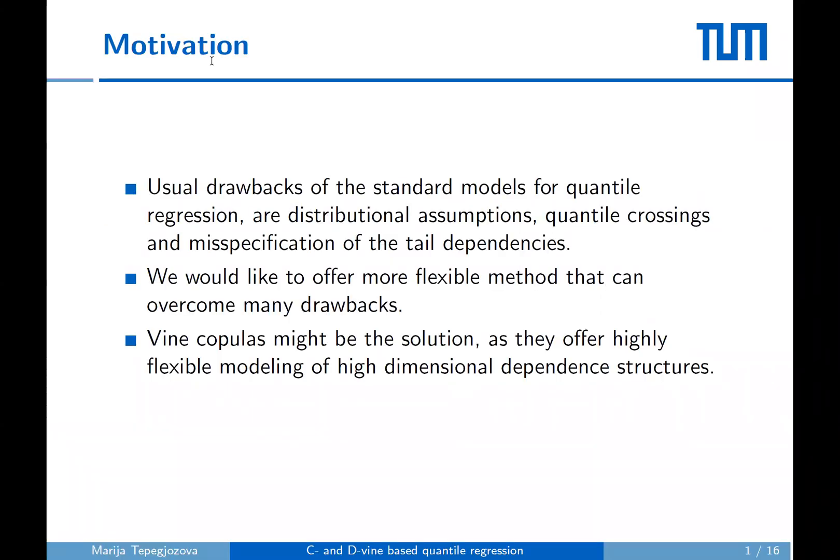Usual drawbacks of the standard models for quantile regression are, among others, strict distributional assumptions, quantile crossings, and misspecification of detailed dependencies. Our goal is to offer a method that will overcome those drawbacks. Possible solutions are vine copulas as they offer highly flexible modeling of dependent structures.